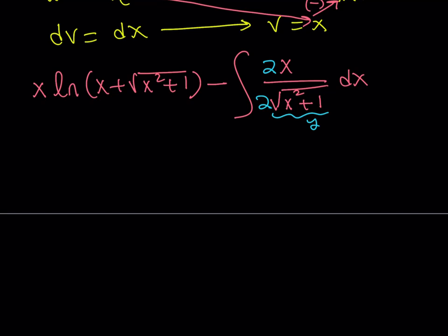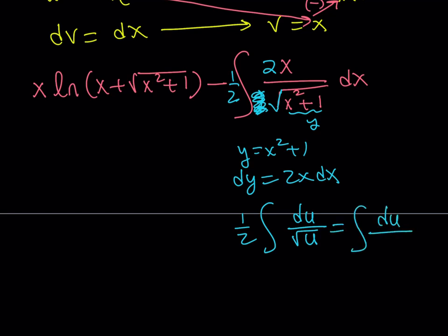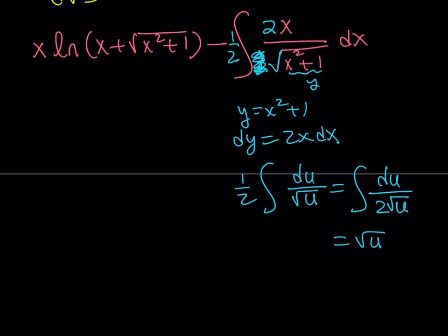I'm calling the expression inside the square root y, so y equals x squared plus 1, and dy equals 2x dx. We're getting an extra one-half, but we can just pull it out. So the integral becomes one-half of y over the square root of y, multiplied by dy. The integral of one over the square root of u is just the square root of u plus a constant. So this integral gives us the square root of x squared plus 1.